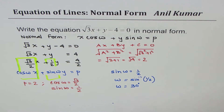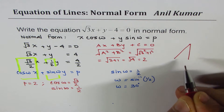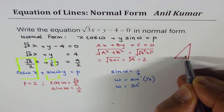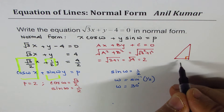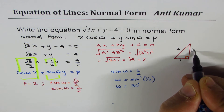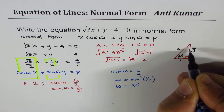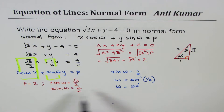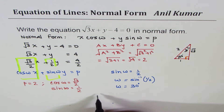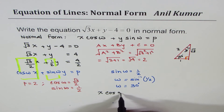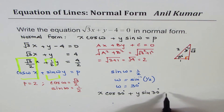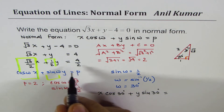You could sketch the standard triangle, but you can only do that for a few special cases. For the special triangle, the sides are 1, 2, √3 when the angles are 60° and 30°. Once you get ω, you write the equation as x cos 30° + y sin 30° = 2.